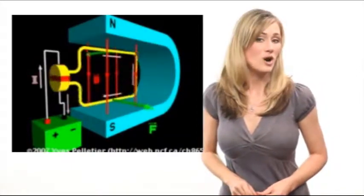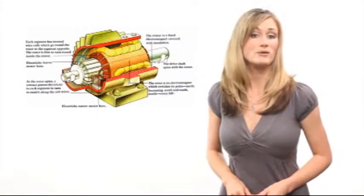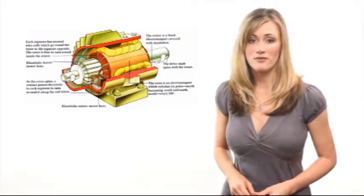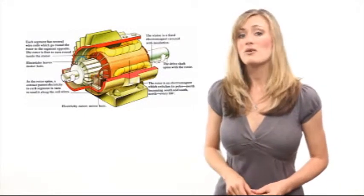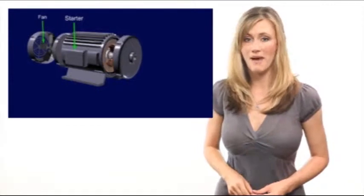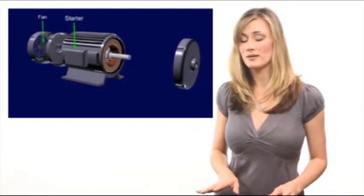An electric motor has a stationary part called a stator and a rotating part called a rotor. The stator generates a magnetic field and the rotor is an electromagnet that rotates inside this field because opposite poles of a magnet attract and like poles repel.